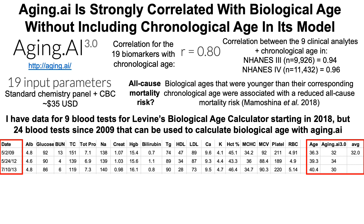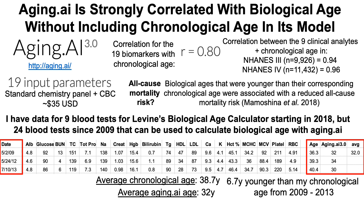Three blood tests over that four-year span, 2009 to 2013. We can see my chronological age on the left, my aging.ai 3.0 biological age in the middle — I'm using version 3.0 since the other versions require more than 19 biomarkers — and my average biological age of those three measurements on the right. My average biological age was 32 compared with my chronological age of around 39 — about a seven-year reduction.